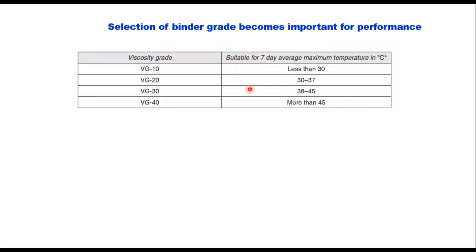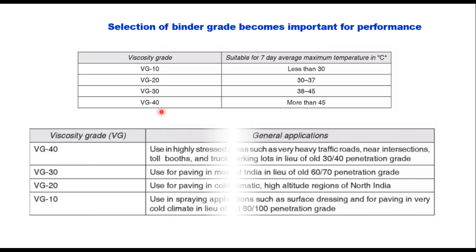Some guidelines for selection of viscosity grade binder can be taken from this table. Depending upon the seven-day average maximum temperature: if it is less than 30°C, VG10 is more suitable; if it is 30 to 37°C, VG20 can be used; if it is more than 45°C, VG40 must be used. VG40 is generally adopted in highly stressed areas such as very heavy traffic loads, near intersections, toll booths, and truck parking. VG30 is suggested for paving in most of India in lieu of 60/70 penetration grade. VG20 is used for paving in cold climate and high altitude regions of north India. VG10 is generally used in spraying applications such as surface dressing and for paving in very cold climates in lieu of the old 80/100 penetration grade.